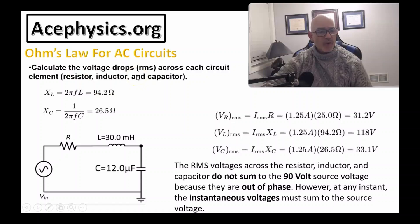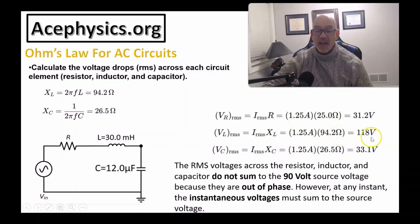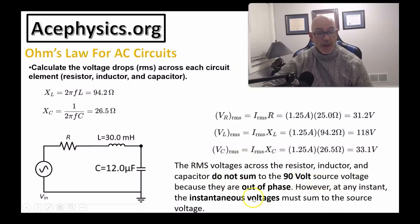For Part B, Ohm's law for AC circuits gives V = I·Z for each element. For the resistor, V = I·R = 1.25 × 25 = 31.2 volts. For the inductor, V = I·X_L = 1.25 × 94.2 = 118 volts. For the capacitor, V = I·X_C = 33.1 volts. Notice that if you sum all these up, you get a much higher value than the 90-volt RMS source. The RMS voltages across the resistor, inductor, and capacitor do not sum to 90 volts because they are out of phase. However, at any instant, the instantaneous voltages must sum to the source voltage.